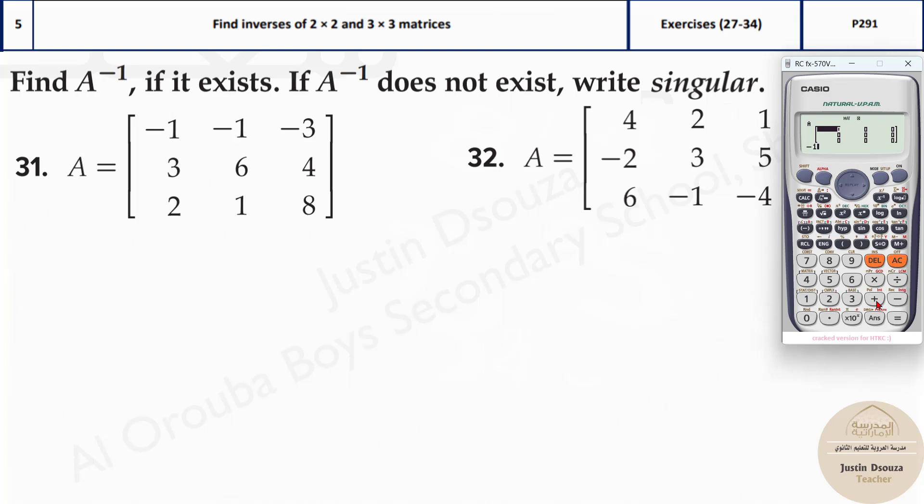Now I'll just type the values, minus 1, minus 1, minus 3, 3, 6, 4, 2, 1, 2, 1, 8. So once this is done, you need to press AC.